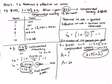So the calculation is 250 times (1 plus 9.5% — or 0.095 — divided by 52) to the power of number of years times m, which is 5 times 52.